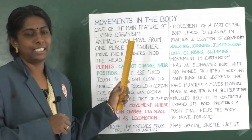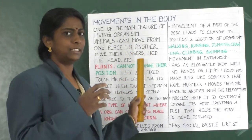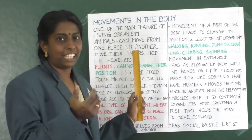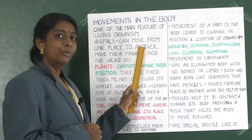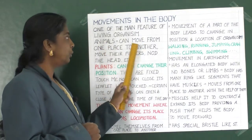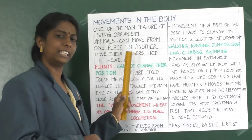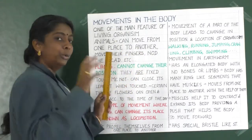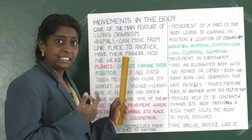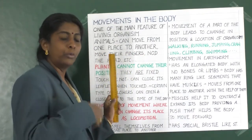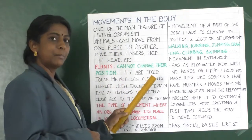Movement in animals: animals can move from one place to another. For example, they can move their fingers, nod their head, eat, and move from one place to another. Next, let us look at movement in plants.